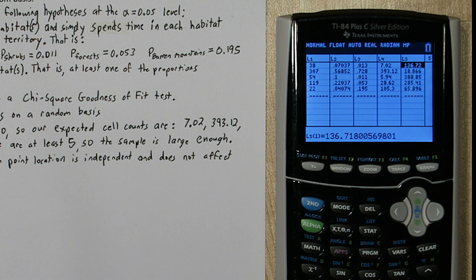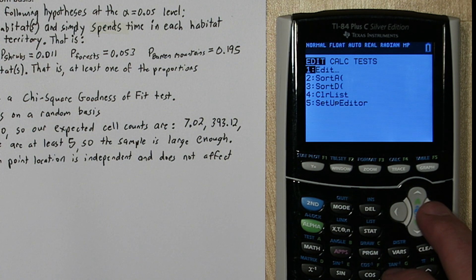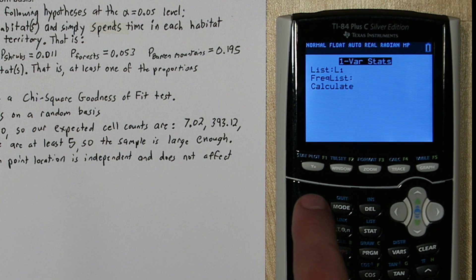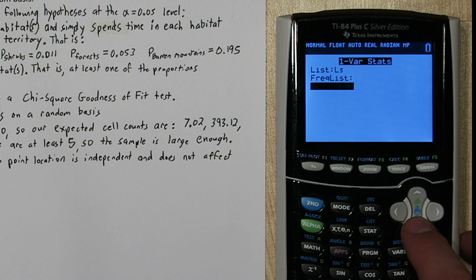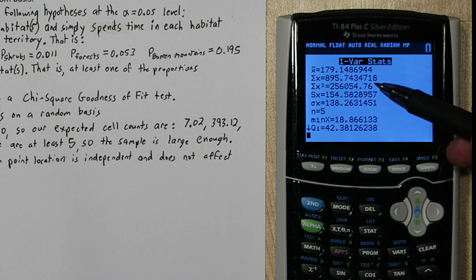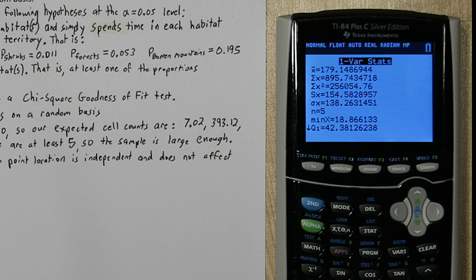So the sum of all these values is going to be our chi-square test statistic. So if I press stat, and I go to calculate, and do one var stats on list five, I can see my sum is 895.74 approximately.